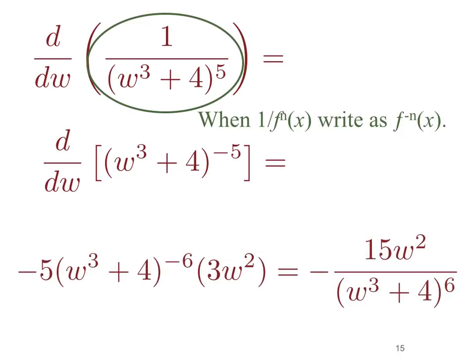Applying the chain rule, the derivative of the inside is 3w squared. The derivative of the outside is minus 5 times w cubed plus 4 to the minus 6. Multiplying 3 times minus 5 gives us minus 15, and we have a w squared. Since w cubed plus 4 is to the minus 6 power, we can put that in the denominator. Our final answer is negative 15w squared over w cubed plus 4 to the 6th power.